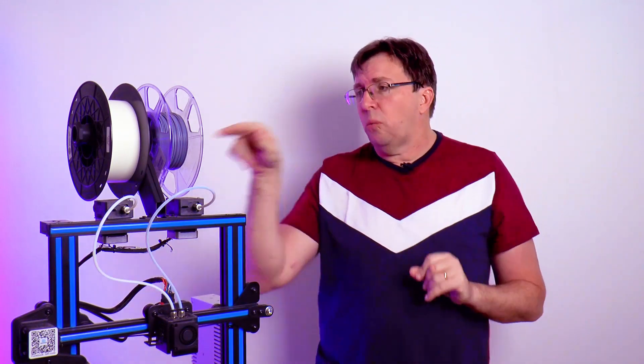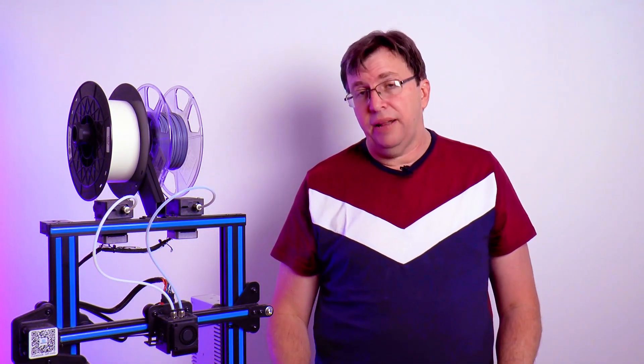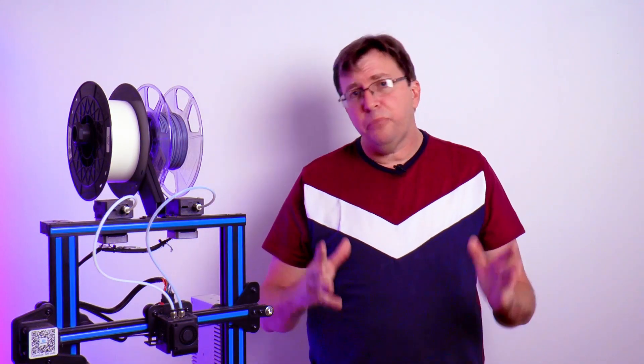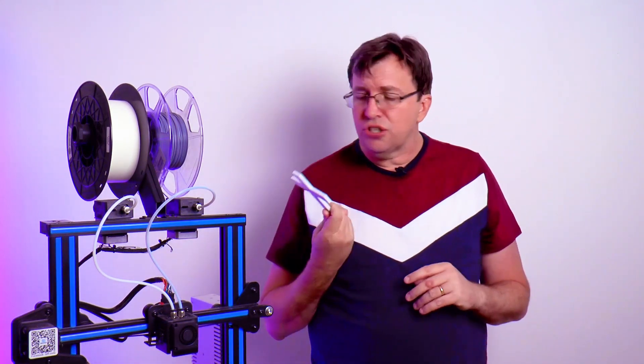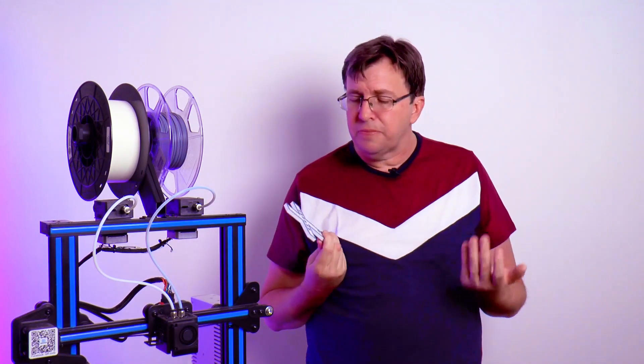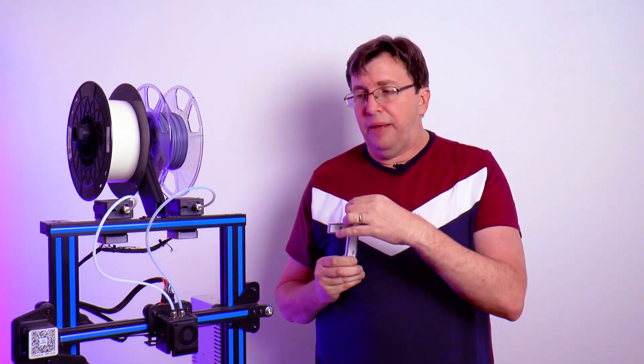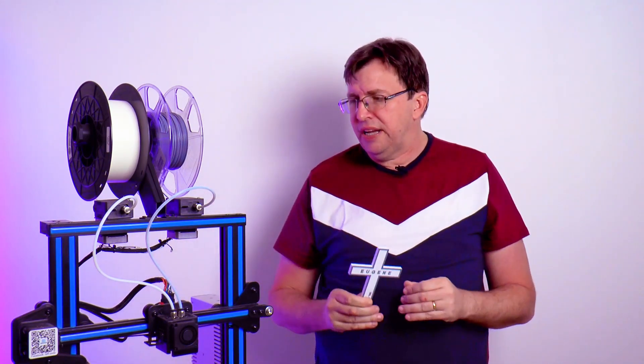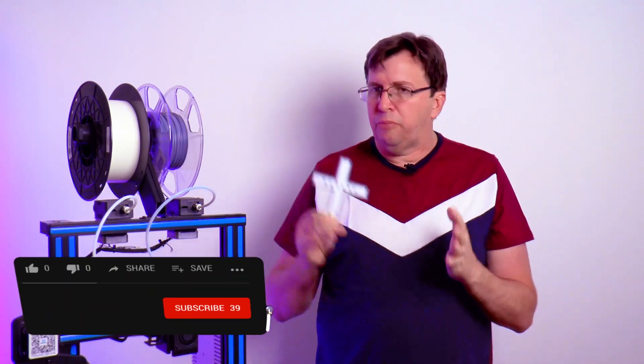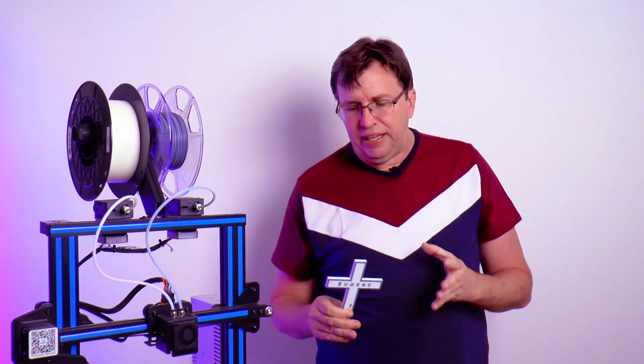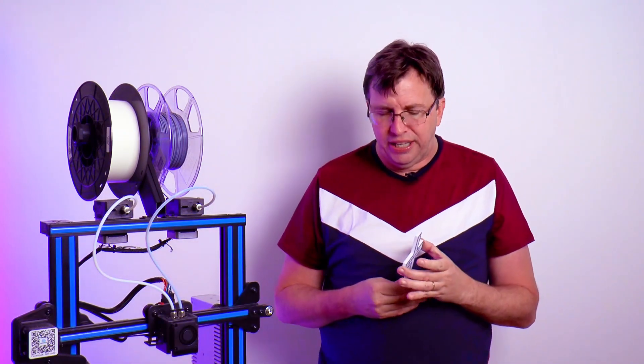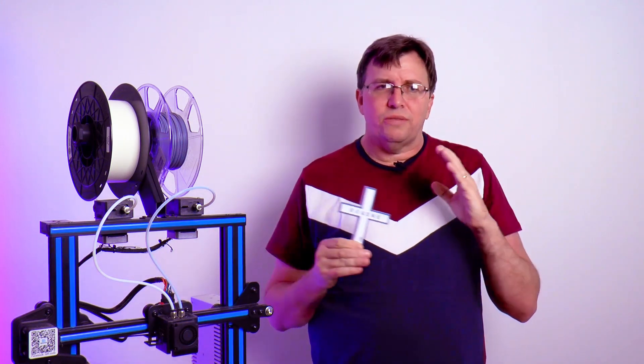The reason why I got the dual color printer was because I print crosses for our church. Here's the cross here. So these crosses are a dual color cross and you print the base there first. You pause the print on the old machine on the Ender. I'd feed in some more filament, try to purge it gently, and then get the printer starting again.